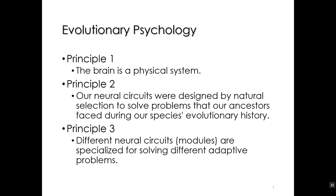Let's review evolutionary psychology. I introduced these three principles at the beginning of the semester. The first principle is that the brain is a physical system — there's no metaphysical aspect to the brain, it's basically neurons, chemicals, and electrical impulses. Principle number two: those neurocircuits were designed by natural selection to solve problems that our ancestors faced during our species' evolutionary history.